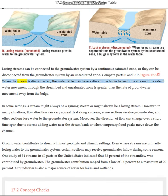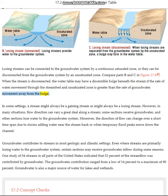When the stream is disconnected, the water table may have a discernible bulge beneath the stream if the rate of water movement through the stream bed and unsaturated zone is greater than the rate of groundwater movement away from the bulge.